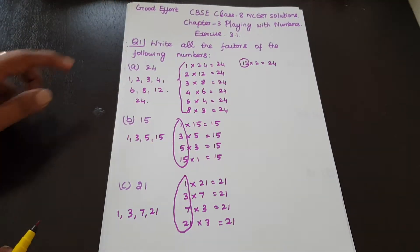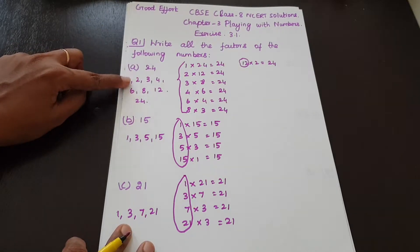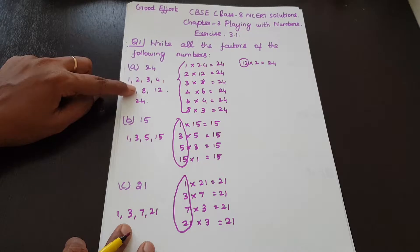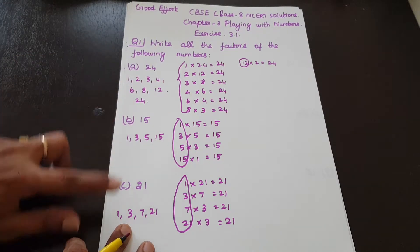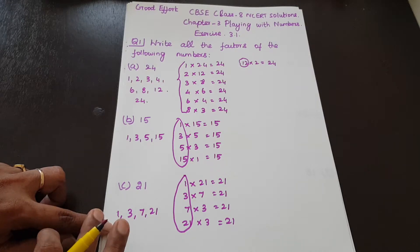So to summarize: the factors of 24 are 1, 2, 3, 4, 6, 8, 12. The factors of 15 are 1, 3, 5, 15. The factors of 21 are 1, 3, 7, 21.